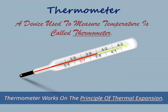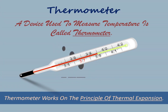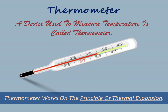A thermometer consists of a long and narrow glass tube. One end of this tube is sealed and the other end has a glass bulb filled with mercury. The temperature scale is marked outside the glass tube of the thermometer.